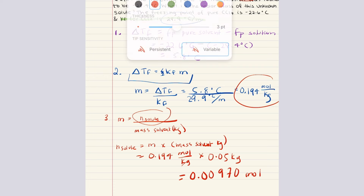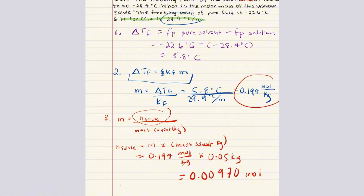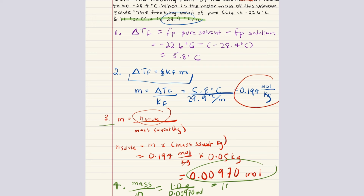In step four, we use the mass of the unknown along with the number of moles we just calculated to find the molar mass. Molar mass equals mass divided by moles. Our mass is 1 gram and our moles is 0.00970, giving us a molar mass of 103 grams per mole. We have calculated the molar mass, and that's how we solve this problem.